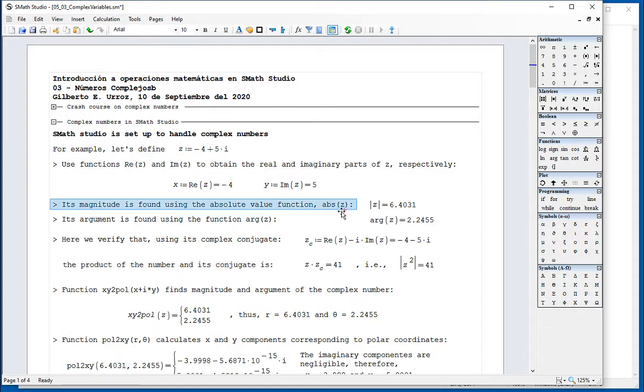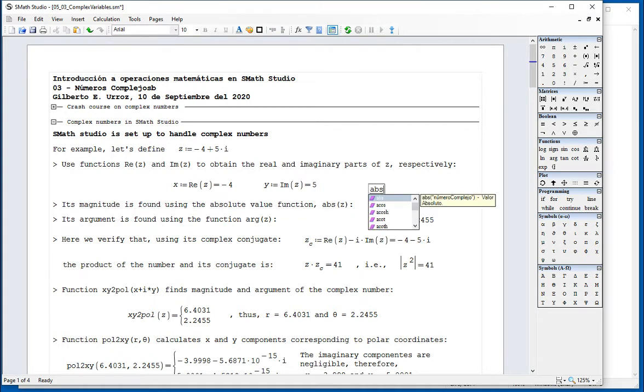The magnitude can be calculated using the absolute value function, and all you have to do is type abs of z, and it will give you that particular value, or use the function arg, lowercase, arg of z, which will give you the angle. We can check that by doing the arctangent of y over x. As you can see, you get the same result as here.